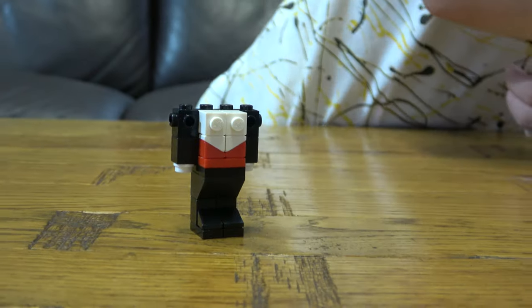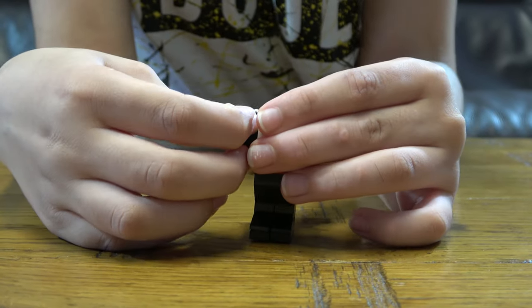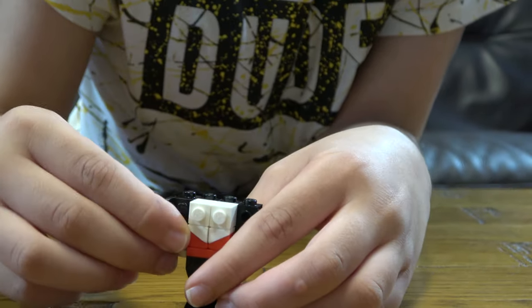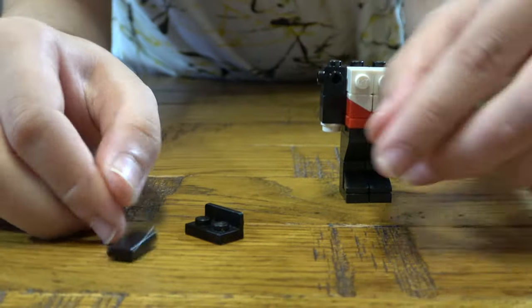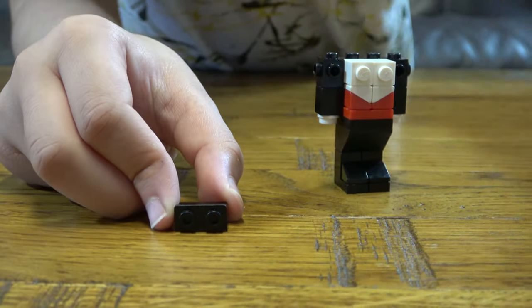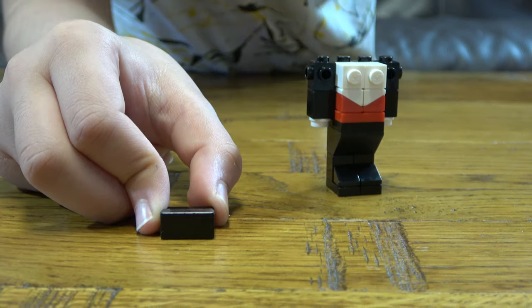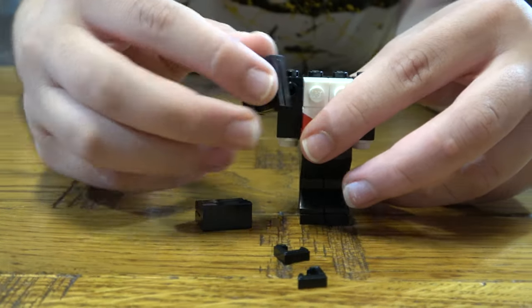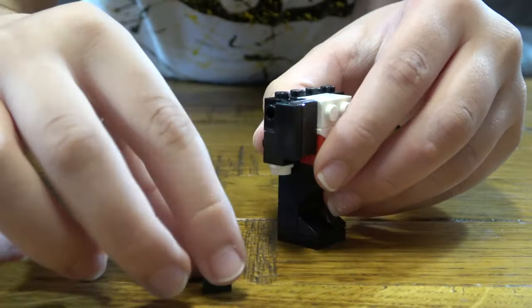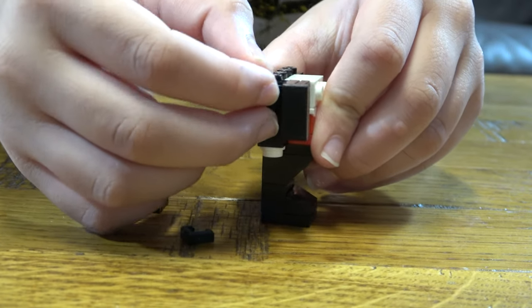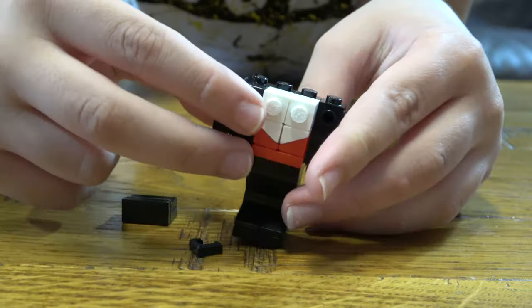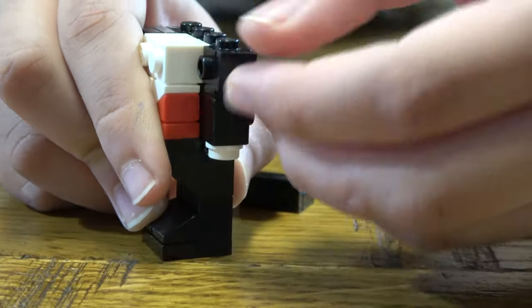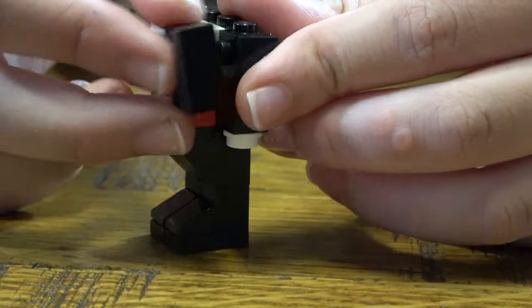Then we place this like this, this one like so, and this here. And we get two of these. First we place one of these onto here, this onto there like so and do the exact same on the other side. Place this here and this here.